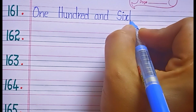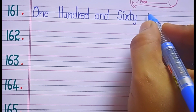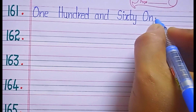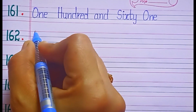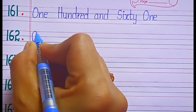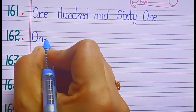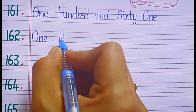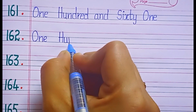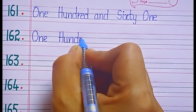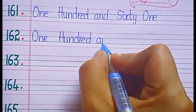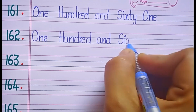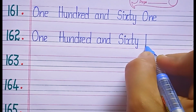One hundred and sixty-one. S-I-X-T-Y, sixty. O-N-E, one. Sixty-one. One hundred and sixty-two. S-I-X-T-Y, sixty. T-W-O, two. Sixty-two.